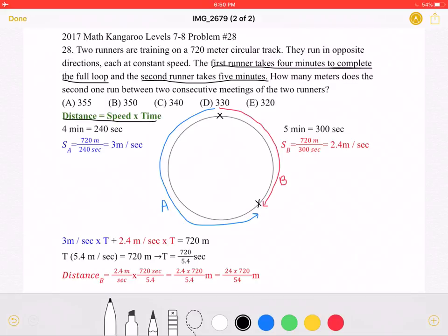So we know that the first runner, runner A, runs around the entire track in 4 minutes, which is equal to 240 seconds.